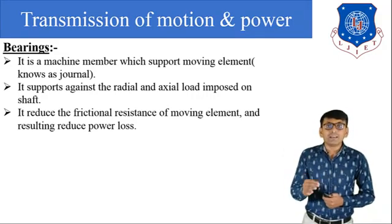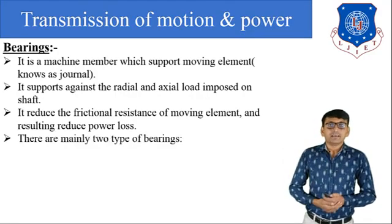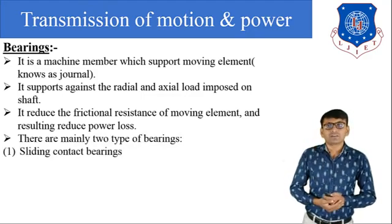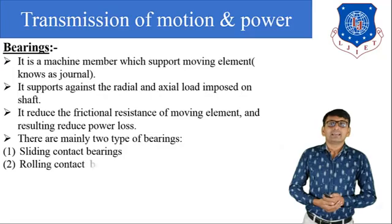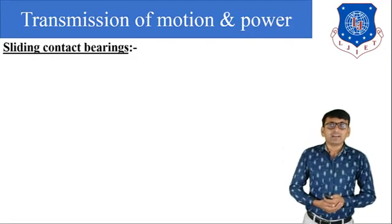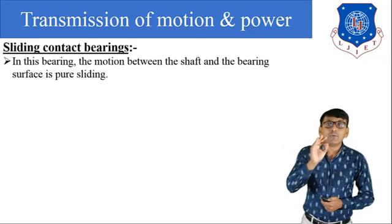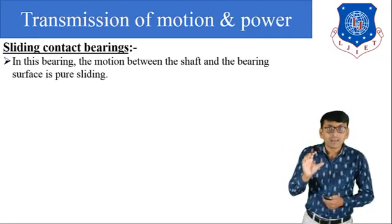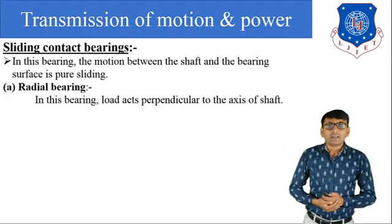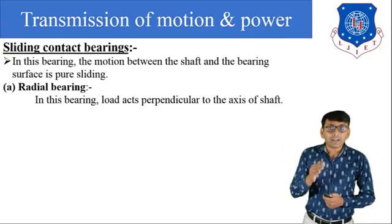Bearings reduce the frictional resistance of moving elements, resulting in reduced power loss. There are mainly two types of bearing: first, sliding contact bearing, and second, rolling contact bearing. In sliding contact bearing, the motion between the shaft and bearing surface is sliding motion.